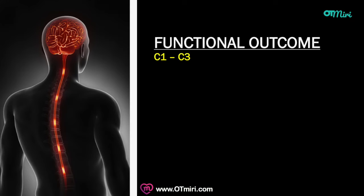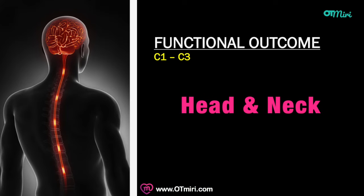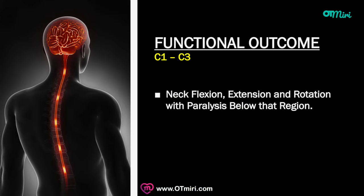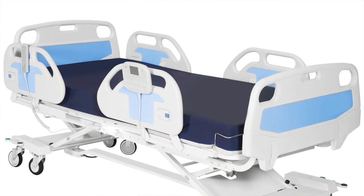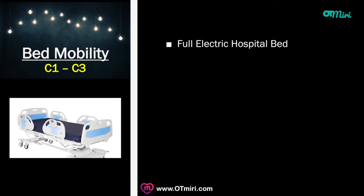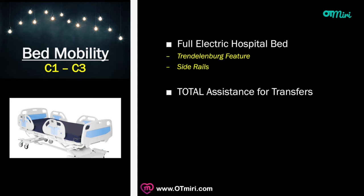With an injury at C1 through C3, the only movement possible is head and neck — specifically neck flexion, extension, and rotation — with paralysis below that region. Patients at these levels require total assistance around the clock for all aspects of care, including respiratory, bladder, bowel management, and ADLs. For bed mobility and safety, we're looking at a full electric hospital bed with Trendelenburg feature and side rails.